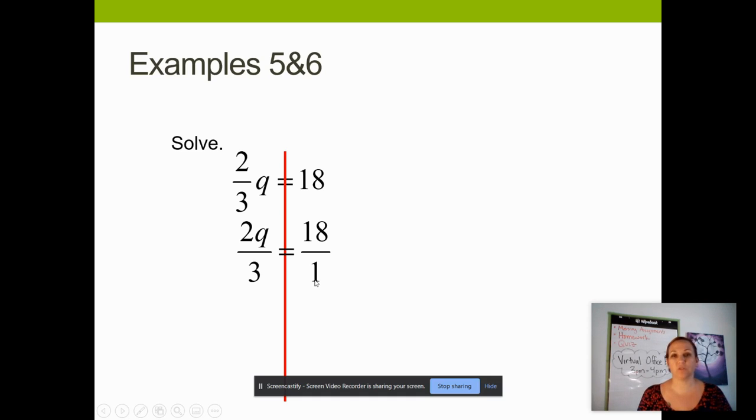From here, I can do cross-multiplying, just like I did on the last problem, where I'm going to multiply my 1 times my 2q. Then I'll carry down the equal sign, and I'll multiply the 3 times the 18. 1 times 2q is 2q, and 3 times 18 is 54.